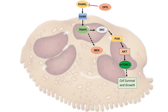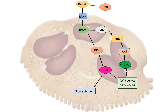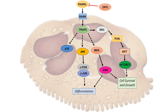TRAF6 can also activate other targets. It can activate MEK, which leads to activation of ERK — ERK aids in cell survival, growth, and can also facilitate differentiation of an osteoclast precursor. TRAF6 can also lead to activation of JNK, and JNK can lead to activation of cFOS and cJUN, which play a role in differentiation. Additionally, TRAF6 can lead to downstream activation of P38, which leads to activation of MITF proteins, which regulate a differentiation response of osteoclast precursors.